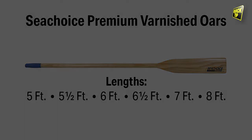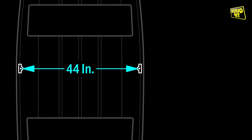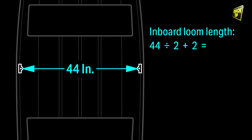For example, the oar lock span on my 12 foot john boat is 44 inches. To find the inboard loom length, I divide the span by two, then I add two to get 24.